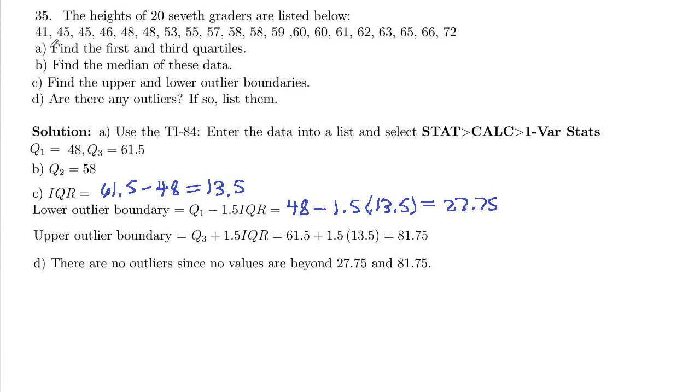And we look up here, our lowest is 41, and our highest is 72, and those are inside of these boundaries. So there are no outliers in this data set.